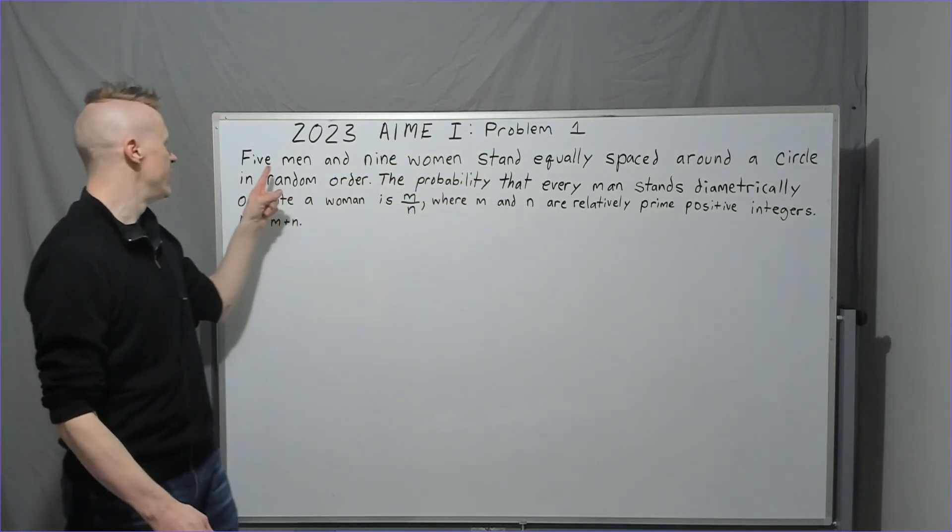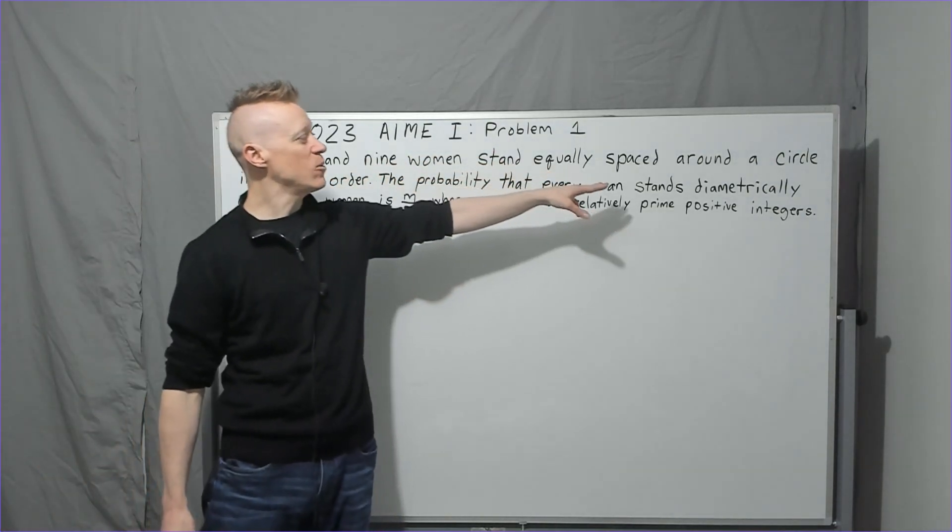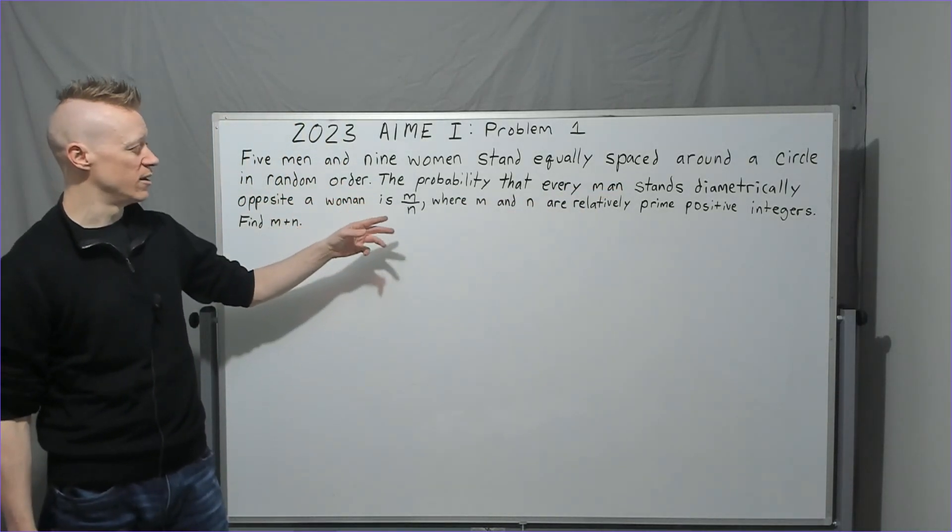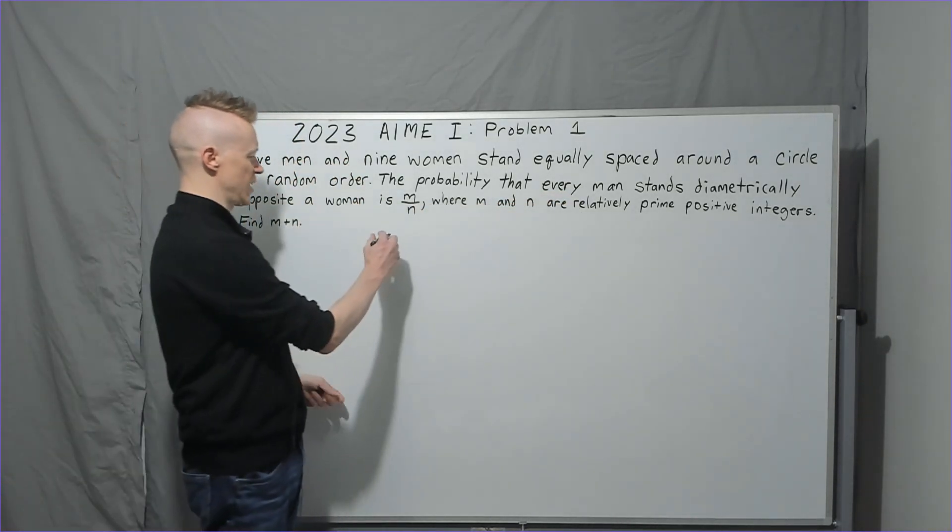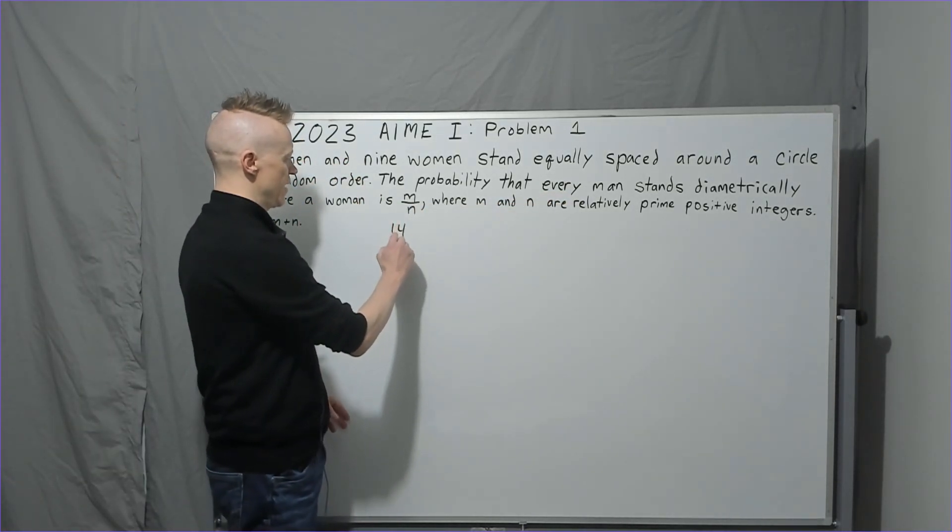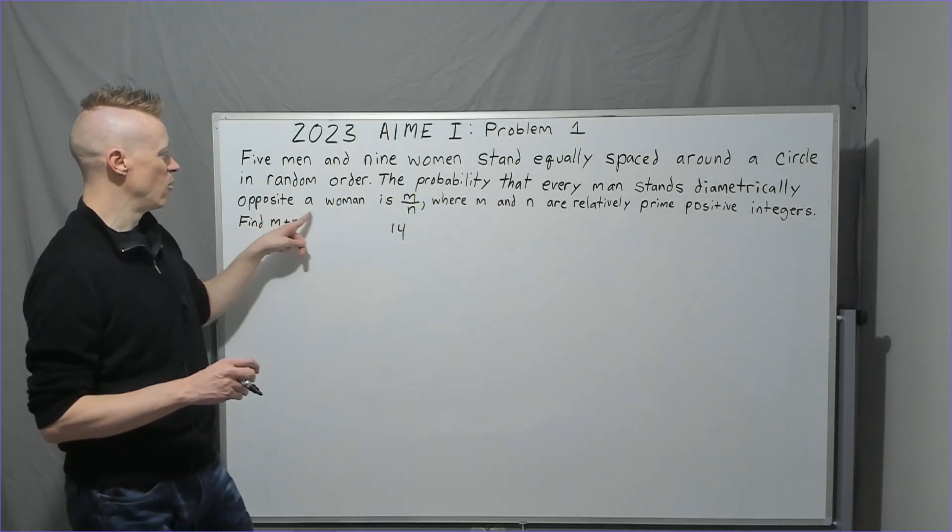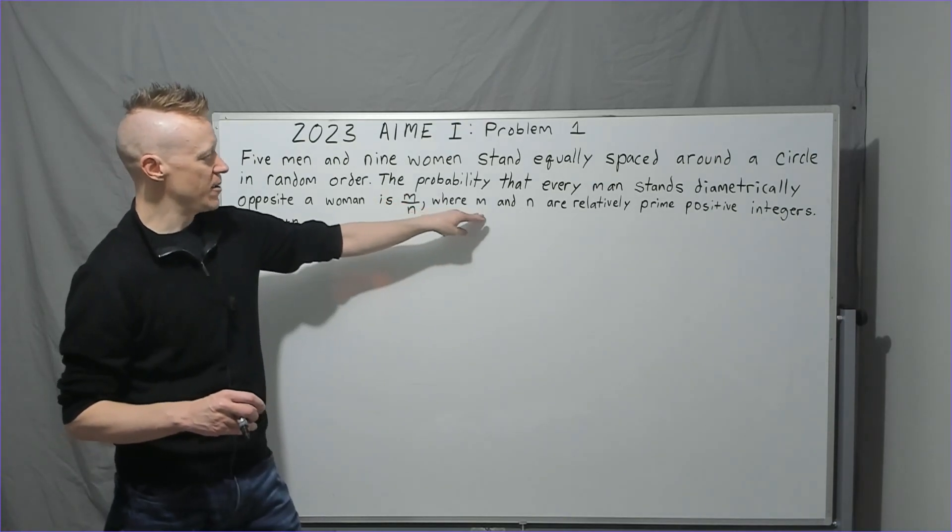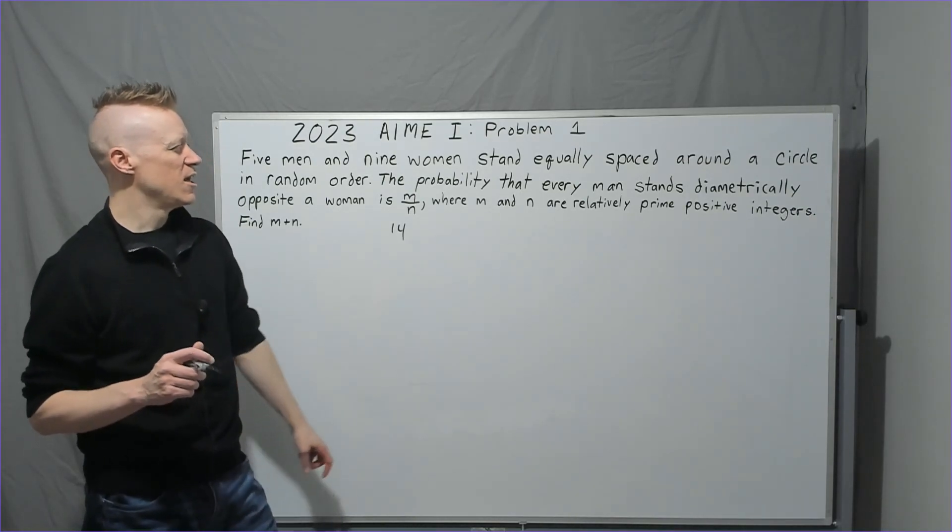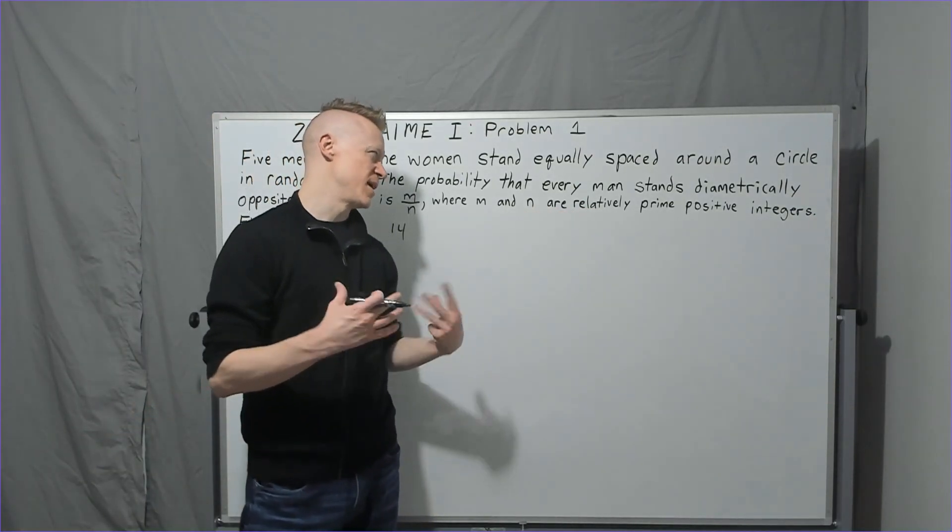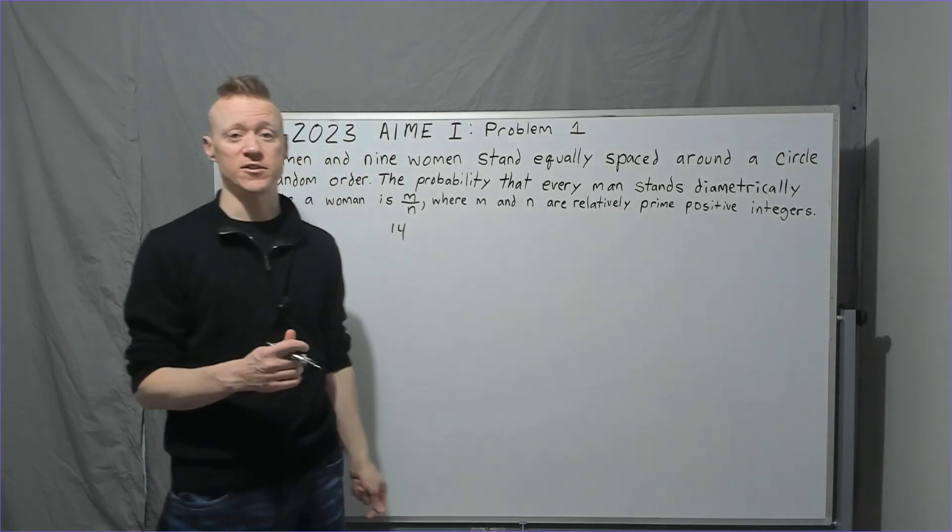Let's get started. 2023 AMC 1, Problem 1: Five men and nine women stand equally spaced around a circle in random order. The probability that every man stands diametrically opposite a woman is m over n, where m and n are relatively prime positive integers. Relatively prime means that they don't have any common divisors other than one. It has nothing to do with them themselves being prime.